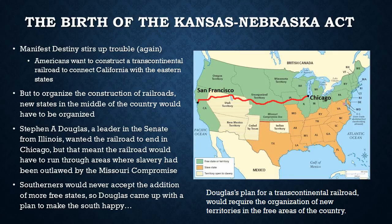The main root of the Kansas-Nebraska Act is Manifest Destiny — basically the idea that the United States should spread across the continent all the way to the Pacific. This had sort of already happened with California coming in as a state, but the West Coast was still really separated from the East Coast. You either had to take a wagon all the way from Iowa to California, or take a boat all the way around South America. So a lot of people wanted to build a transcontinental railroad — a railroad that goes across the continent — to connect California to the rest of the country.